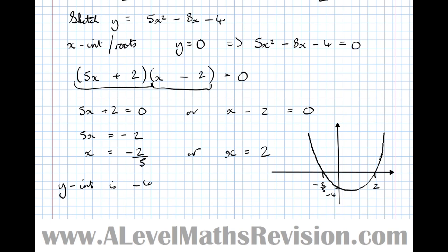Now a common mistake to make is for people to make it symmetrical about the y-axis. I've made sure that my minimum point is a little bit to the right of the y-axis because this curve is symmetrical. If we're 2 across here and only 2/5 across here, then the centre point, the line of symmetry, has to be in the middle there. Make sure you get that in the right place.